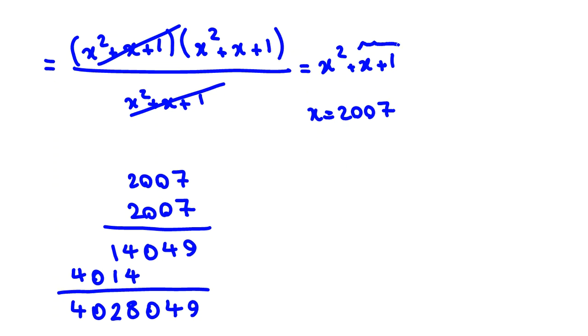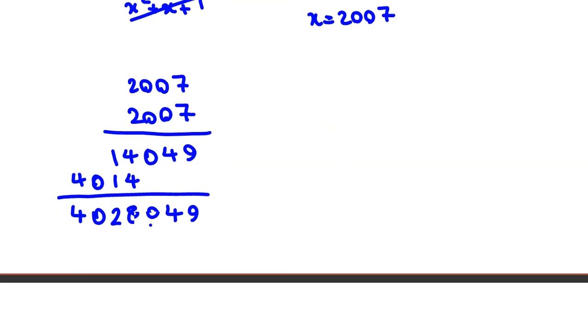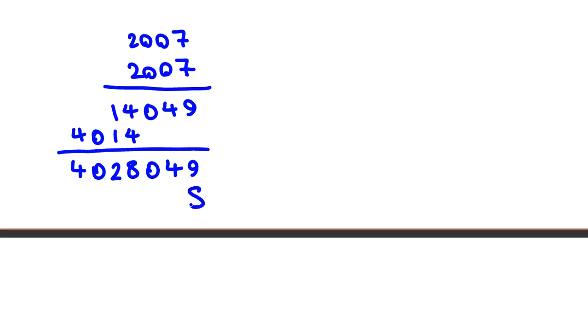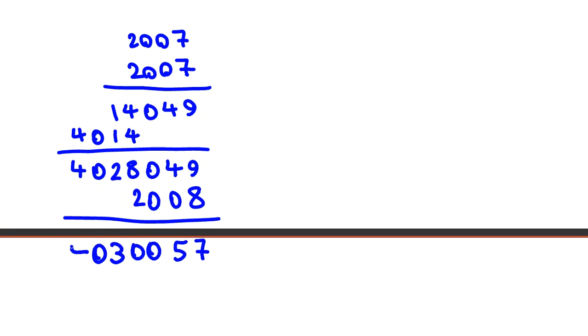Now we should add x plus 1, which is 2008. If I add this number with 2008, let's see what the last answer is. 8 plus 9 is 17. We have 1 plus 4 is 5, 0, 2 plus 8 is 10, we have 1. 1 plus 2 is 3, 0, 4. So the answer to this problem is 4,030,057. We've solved this.